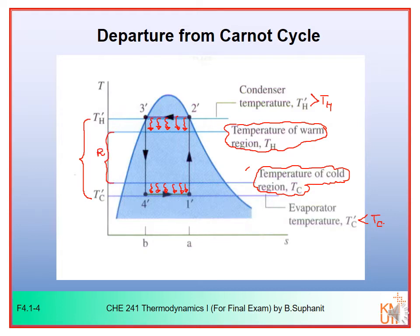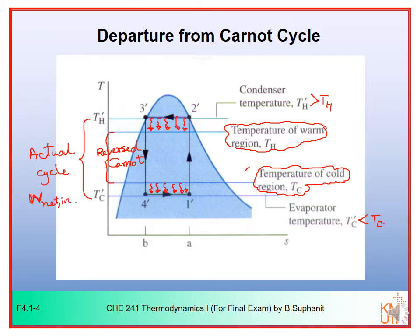For the actual vapor refrigeration system, you can see that the temperature range would be wider than in the reverse Carnot cycle. The reverse Carnot cycle operates between TH and TC, but the actual cycle operates between TH prime and TC prime. With this wider temperature range in operation, you will consume more net work input than the ideal Carnot cycle.